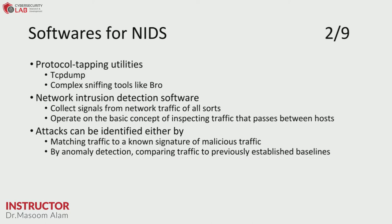Network intrusion detection software collects signals from network traffic of all sorts and operates on the basic concept of inspecting traffic that passes between hosts. Attacks can be identified either by matching traffic to a known signature of malicious traffic — which is how most security products work — or by anomaly detection systems, which have more sophisticated coverage and compare traffic to a previously established baseline.